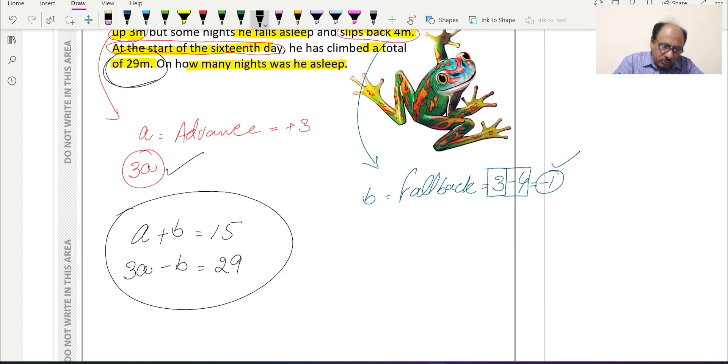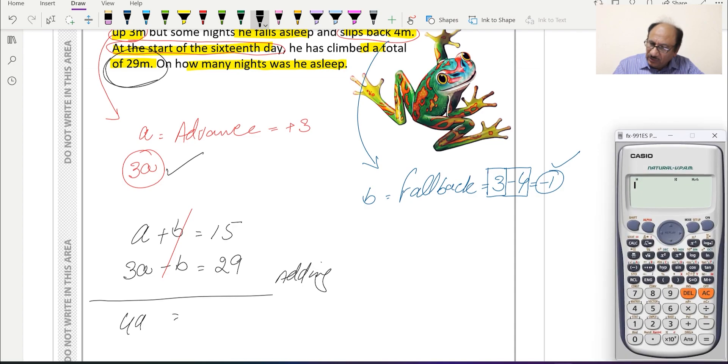These are basically the two simultaneous equations which we formed, and now we can solve them. We see that the coefficient of 'b' is plus 1 and minus 1 in both equations, and we can add and cancel. Adding these two equations, we can cancel these two.